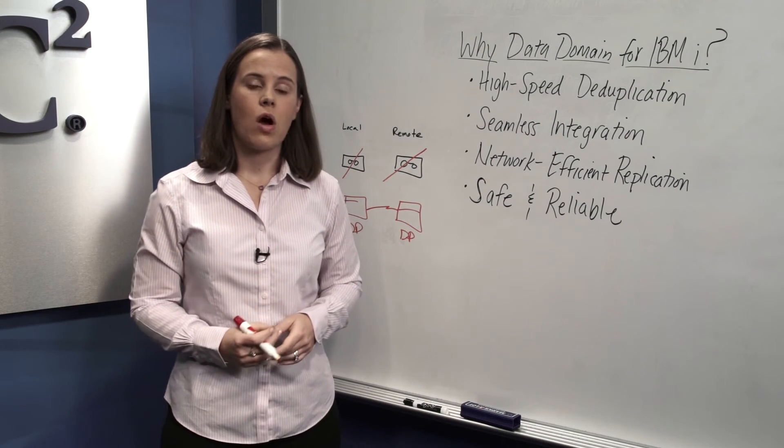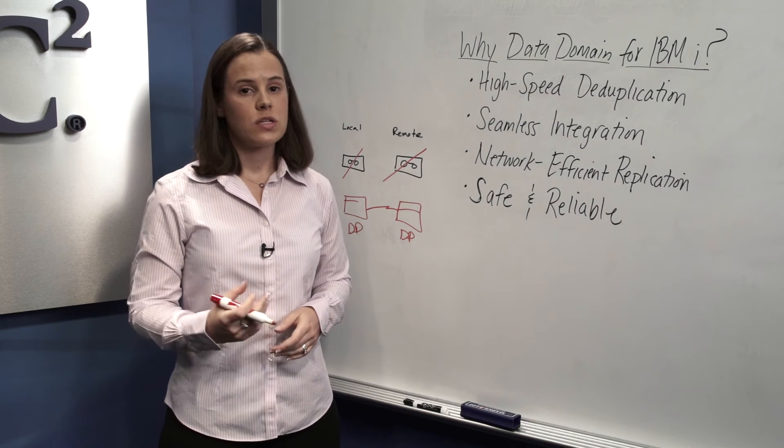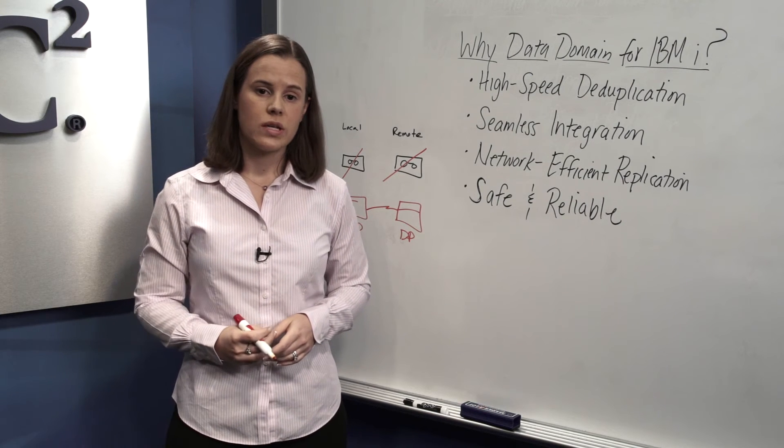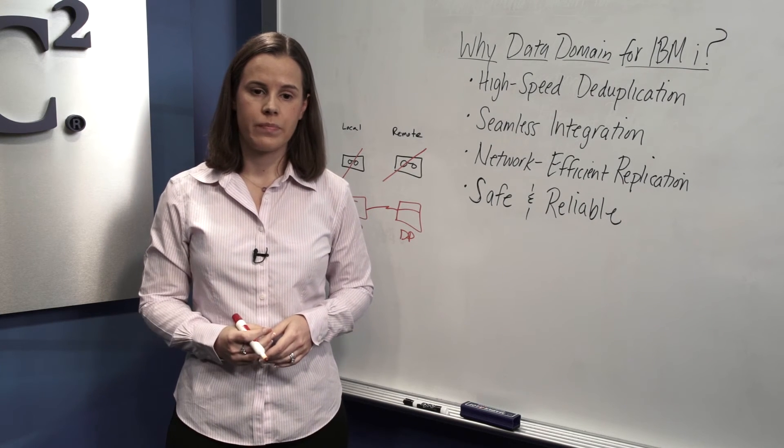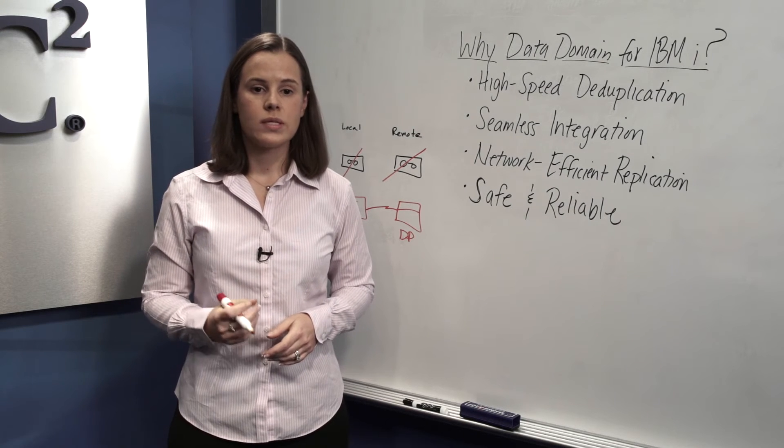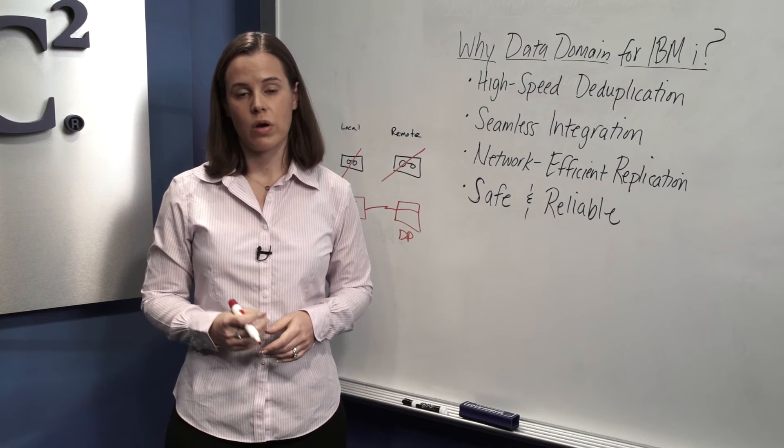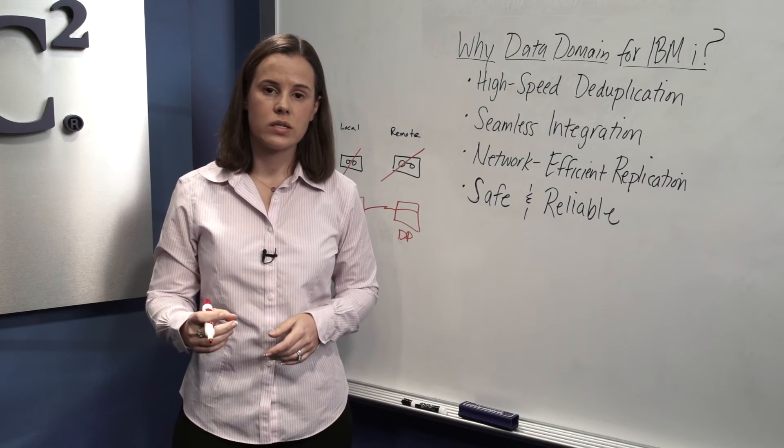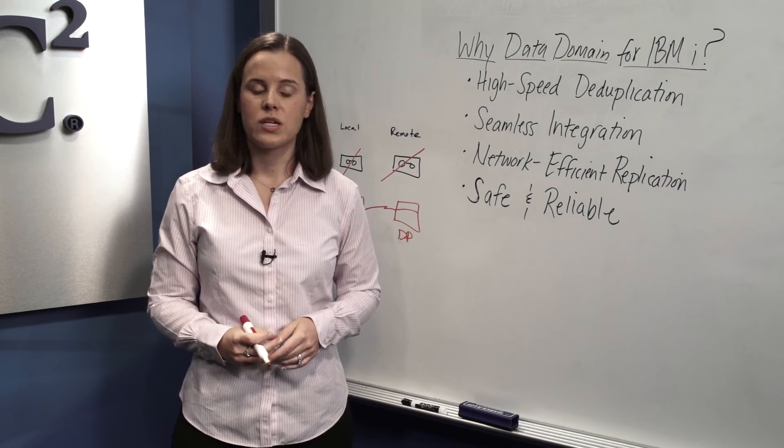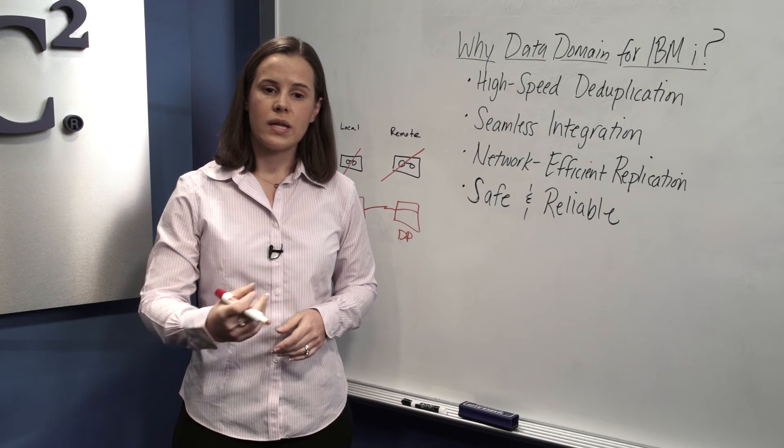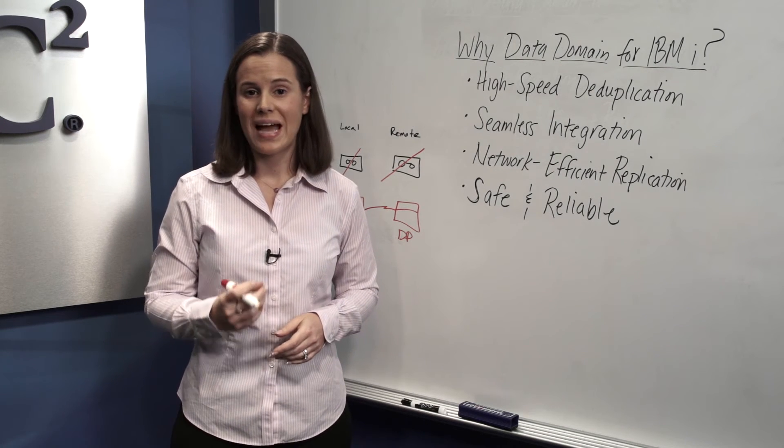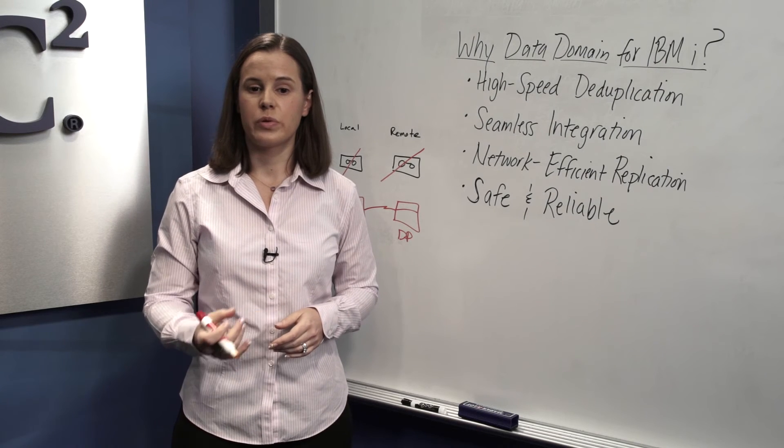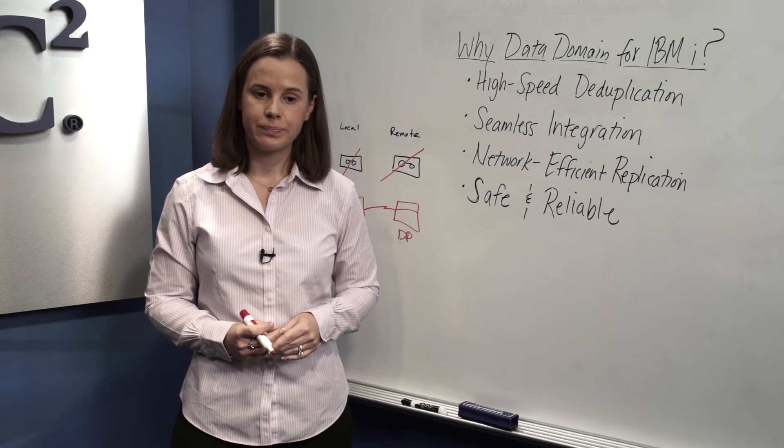Once you consolidate all that data, you can then efficiently replicate it off-site to a secondary facility, either your own DR site or at a service provider. Data Domain systems only send unique and compressed data across the network, which requires a fraction of the bandwidth, time, and cost compared to traditional replication methods. By only sending unique data, data sets are effectively shrunk by 99% to a size where network-efficient replication is both fast and reliable.